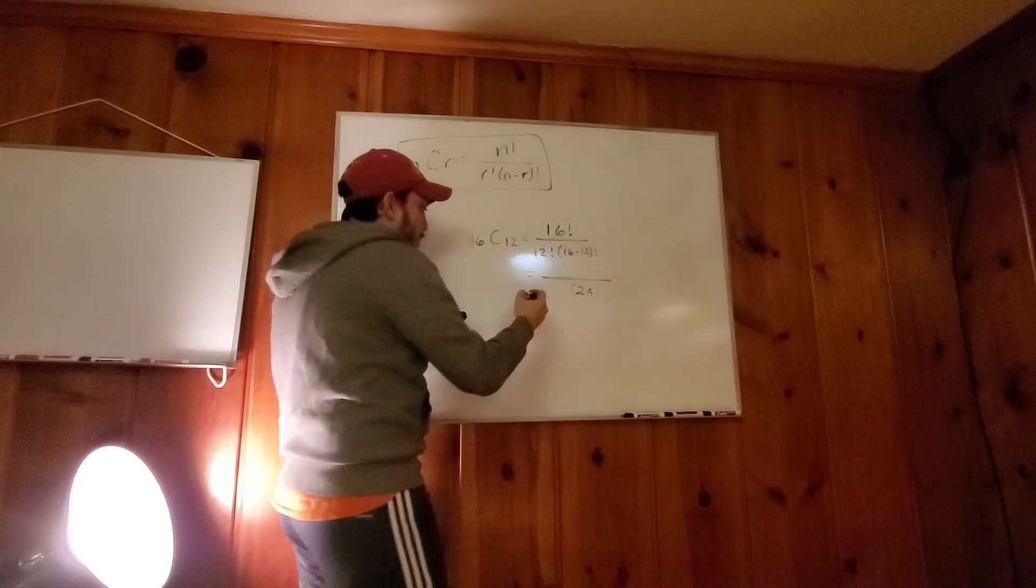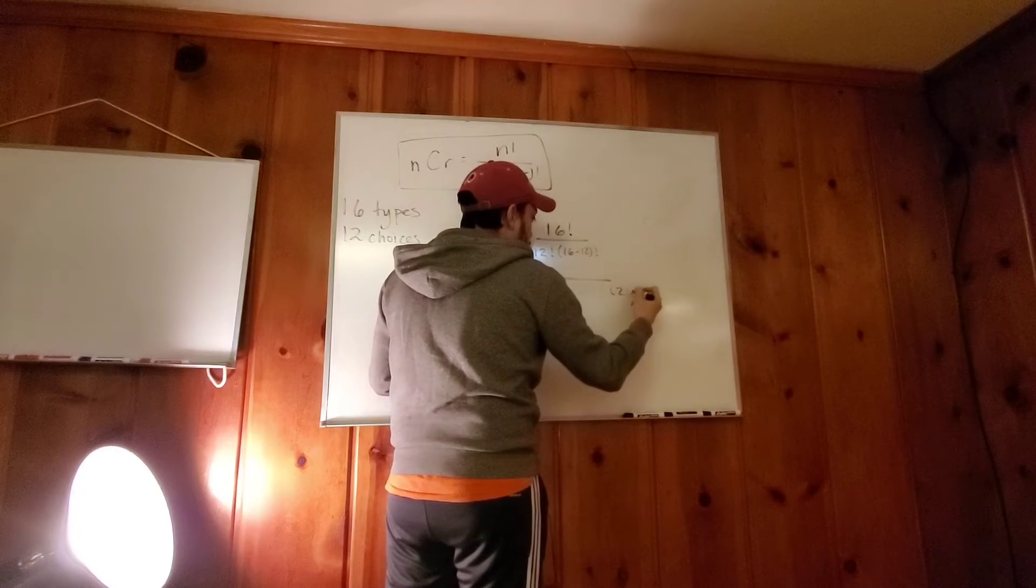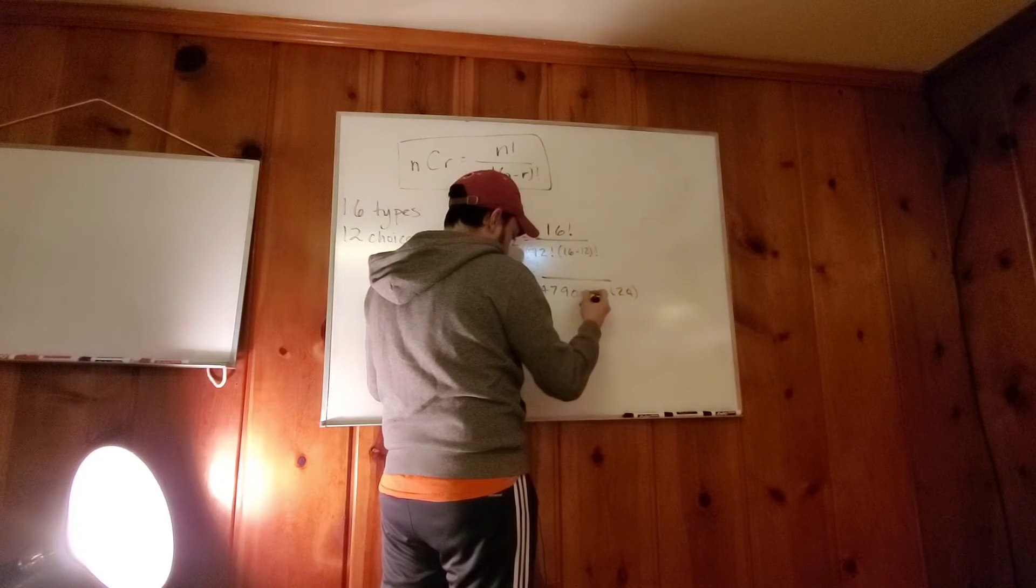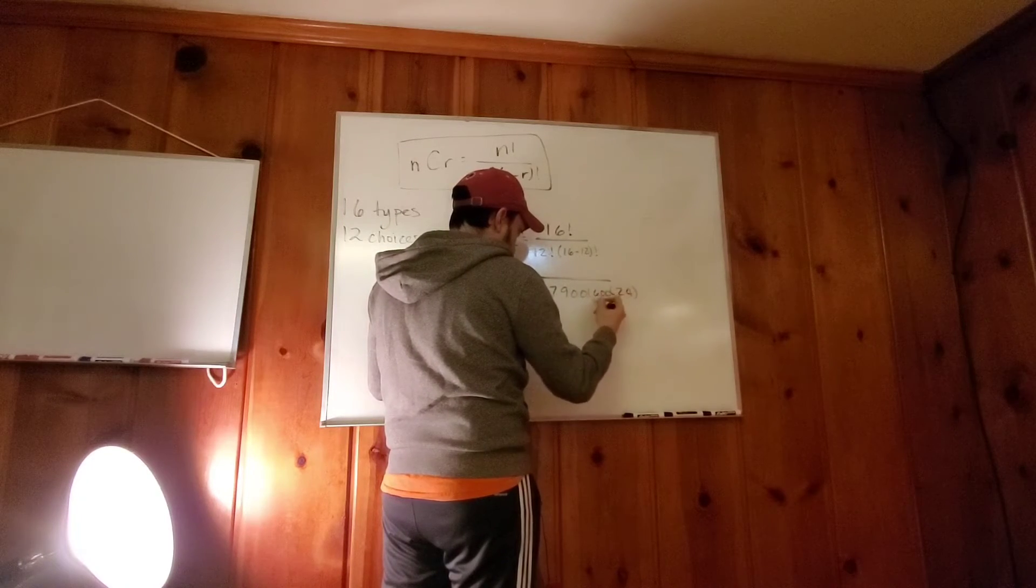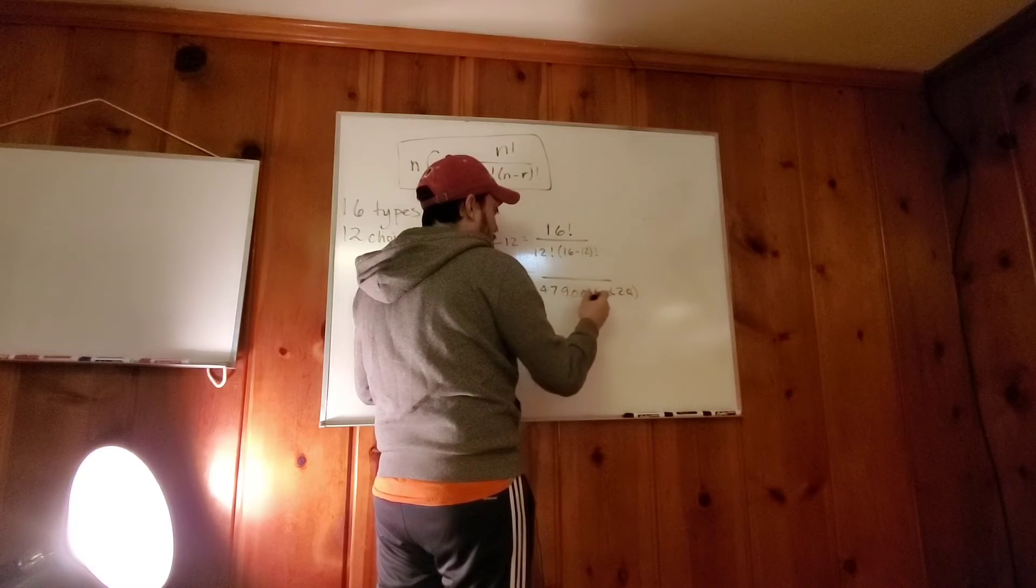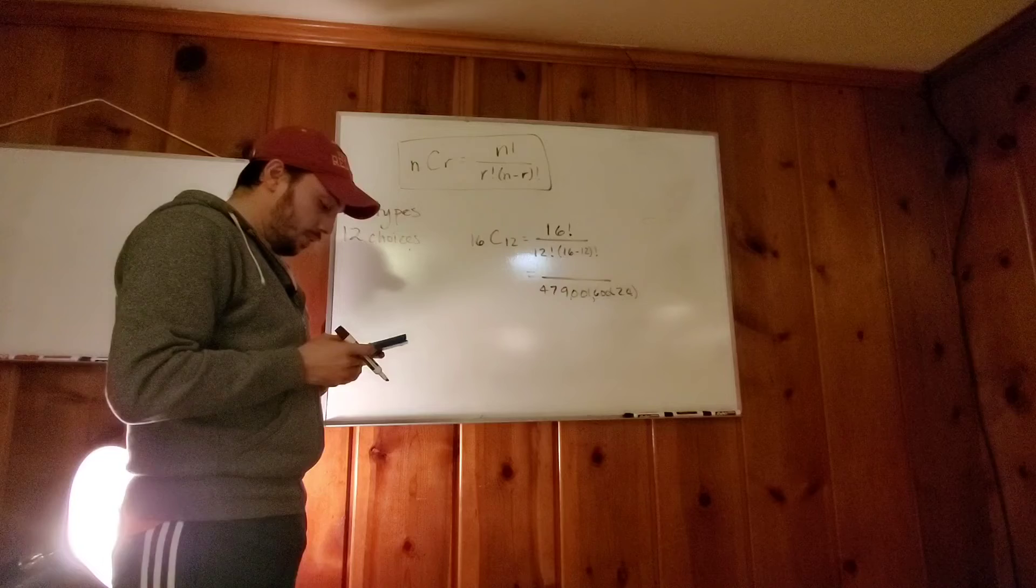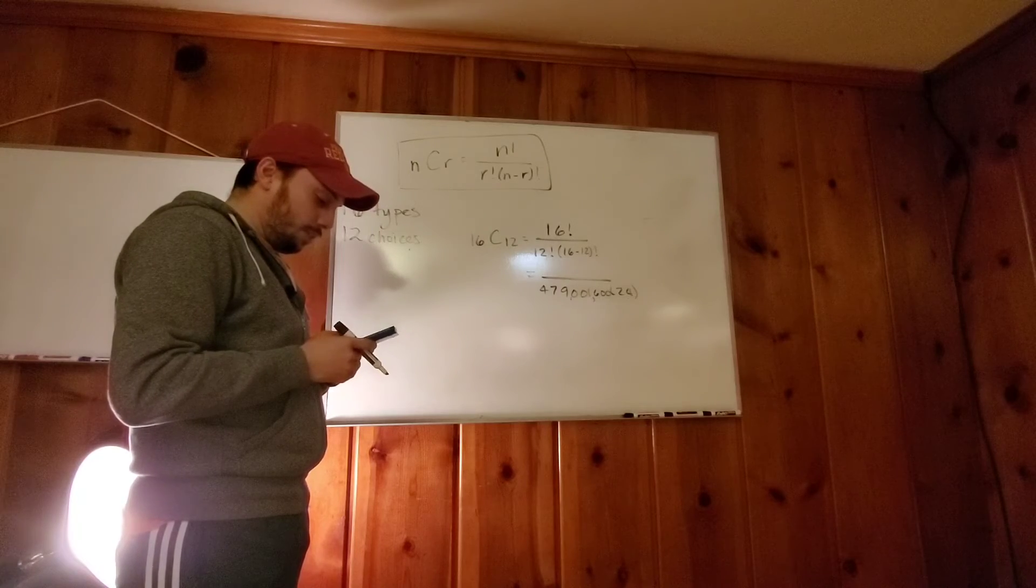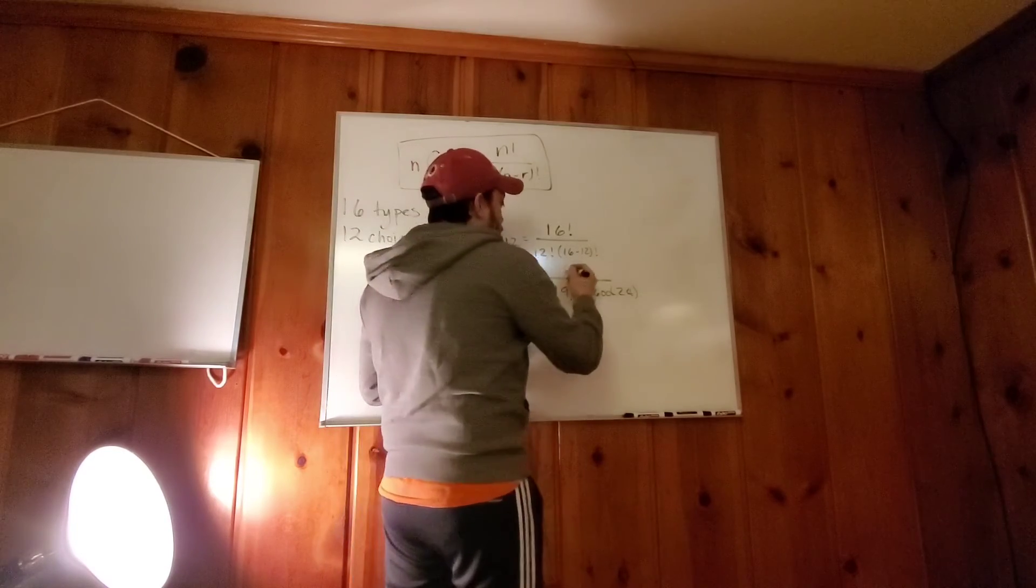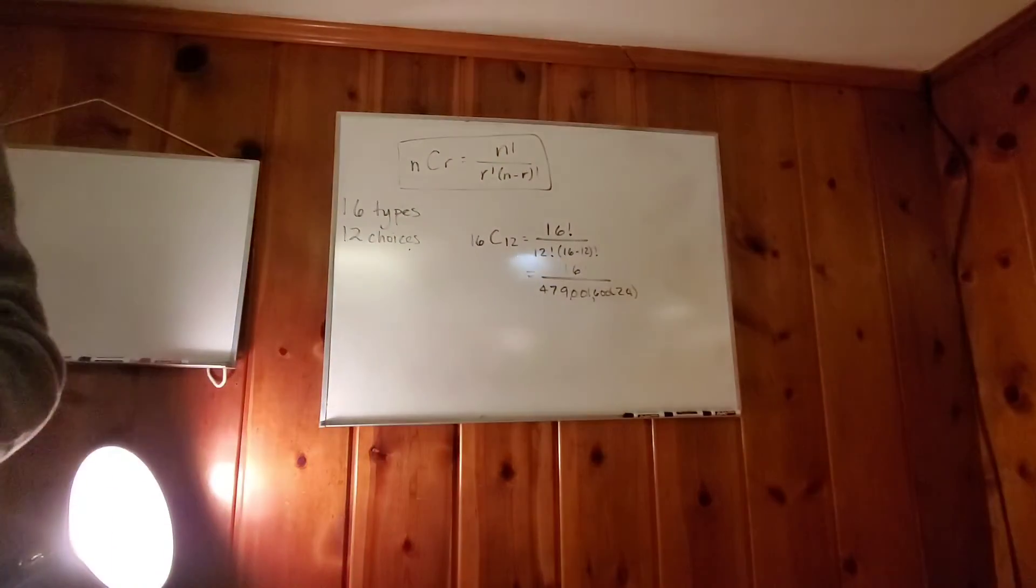Wow. It's a huge number. Should have put the 24 over here. This is a huge number four, seven, nine, zero, zero, one, six, zero, zero. So it's 600. It's 479 million, 1,600. Yeesh. It's a lot. Wish I had that much money. And then 16, let's just put 16 factorial. I'm going to show you something really quickly in the calculator so that you guys don't get bogged down like I did right now.